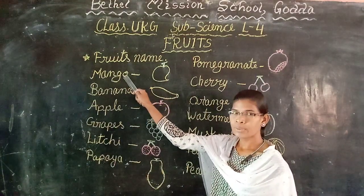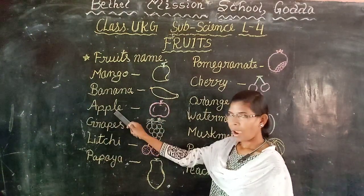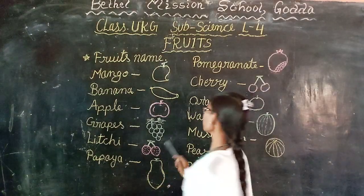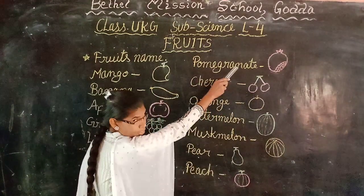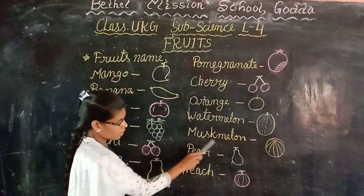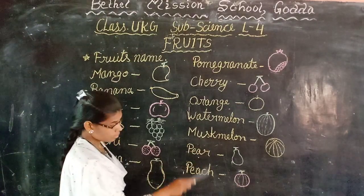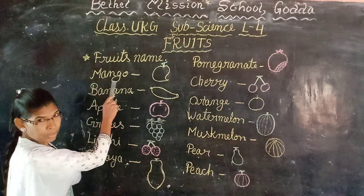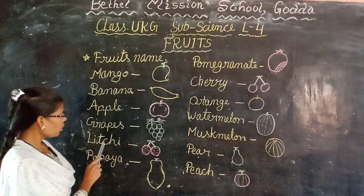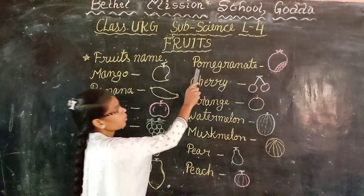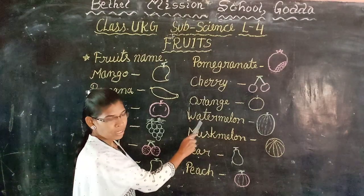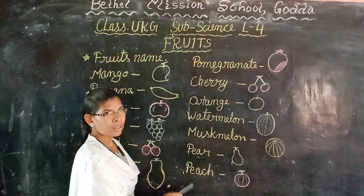Mango, banana, apple, grapes, litchi, papaya, pomegranate, cherry, orange, watermelon, muskmelon, pear, peach. Once more — mango, banana, apple, grapes, litchi, papaya, pomegranate, cherry, orange, watermelon, muskmelon, pear, peach.